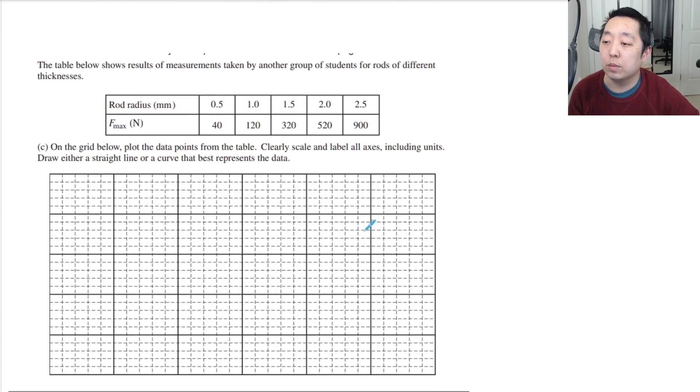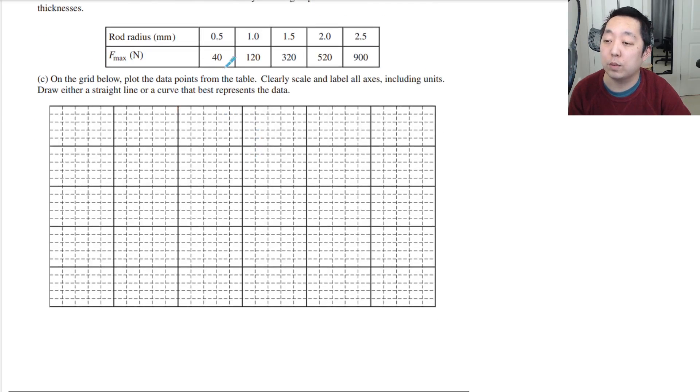The table below assumes the results of measurements taken by another group of students for rods of different thicknesses. On the grid below, plot the data points from the table and clearly label all axes and draw a straight line or curve that best represents the data. So they just want you to do this data. So let's say this is r and this is F. Let's see, the radius goes up to 2.5, so let's make this 0.5, 1, 1.5, 2, and 2.5. This is 0. This is measured in millimeters. And F in newtons here, let's see, we can go 40 to 900, so definitely have to have zero here, and I think these have to go by 200 if I need to go up to 900.